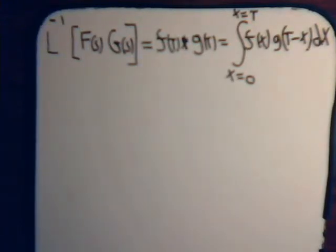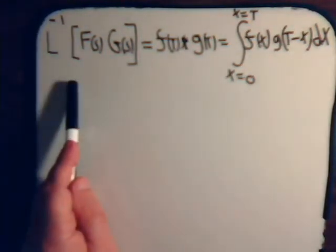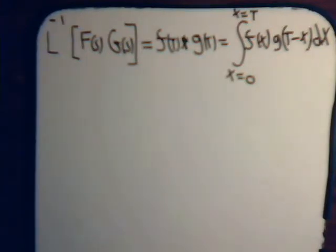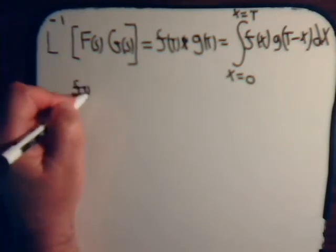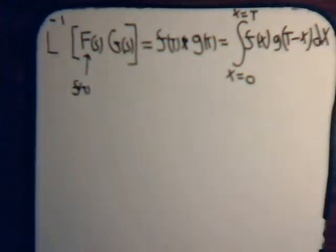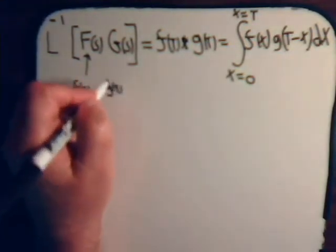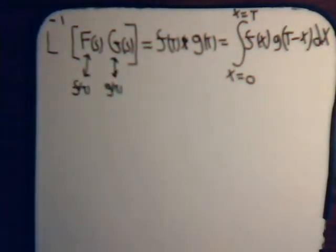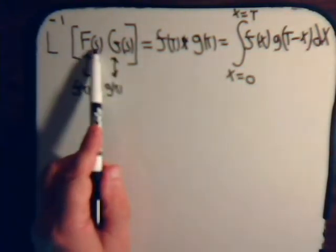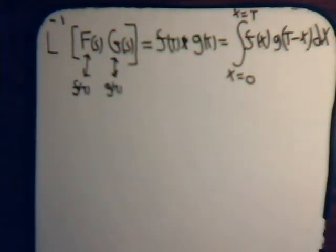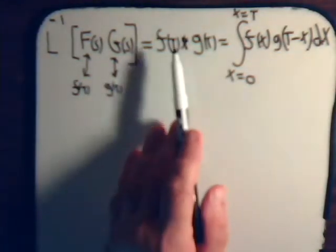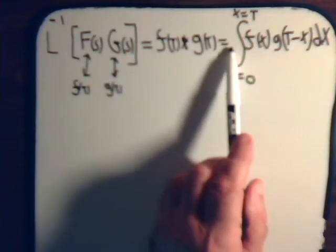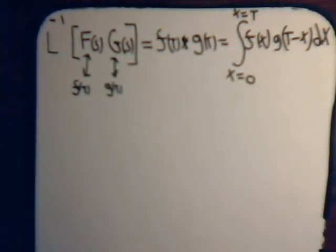In the last three videos we have been working with this expression and we have used it to find the inverse Laplace transforms of a particular expression that can be written as the product of two Laplace transforms. We've had three examples so far. We have a function f of t and that is its Laplace transform. We have another function g of t and this is its Laplace transform. If we multiply these two Laplace transforms together and take the inverse of it, we do not get f of t times g of t — we get the convolution of f of t with g of t, which is this integral as we explained in our introductory video.